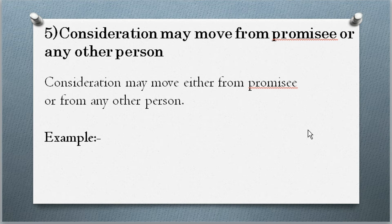The fifth rule of consideration is that consideration may move from the promisee or any other person. For example, if my service is provided in college and I take payment from my parents as a third party, that third party is involved in this consideration. This shows that consideration does not have to come only from the two contracting parties.